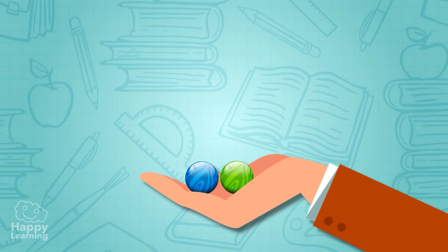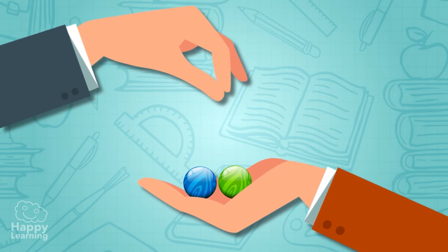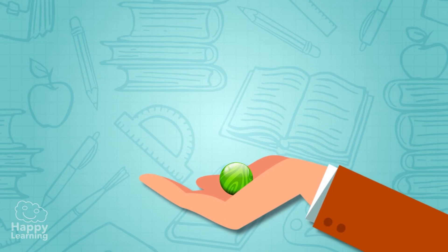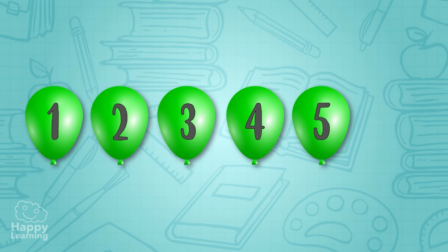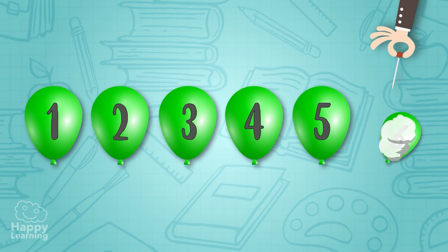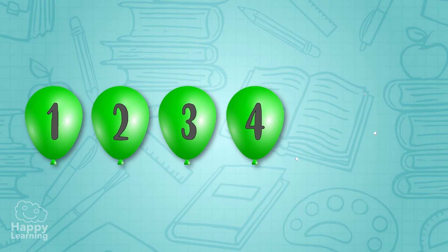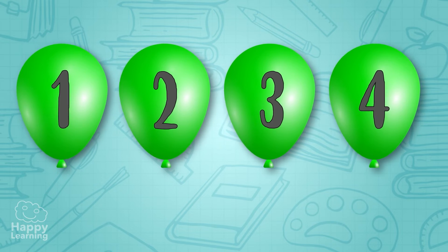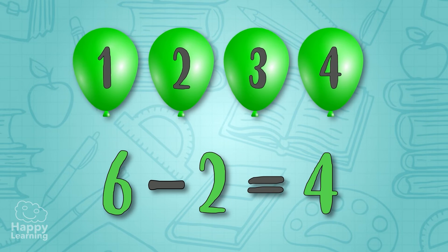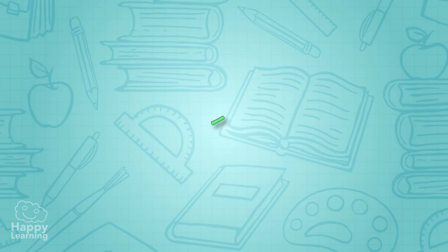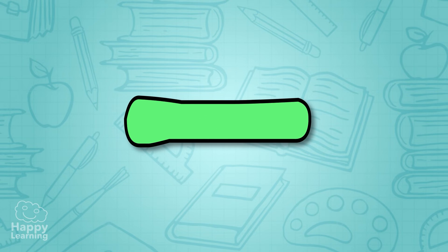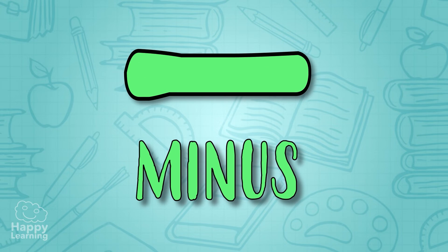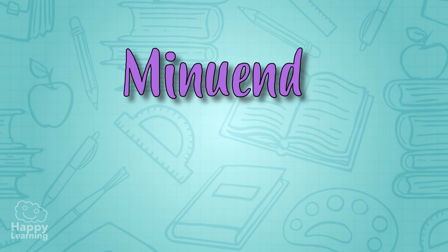Subtracting is the opposite of adding — it's taking away a smaller amount from a larger amount. For example, if we have six balloons but two of them burst, we've got one, two, three, and four balloons left. Six minus two equals four. A subtraction is represented by this sign, which is called minus.